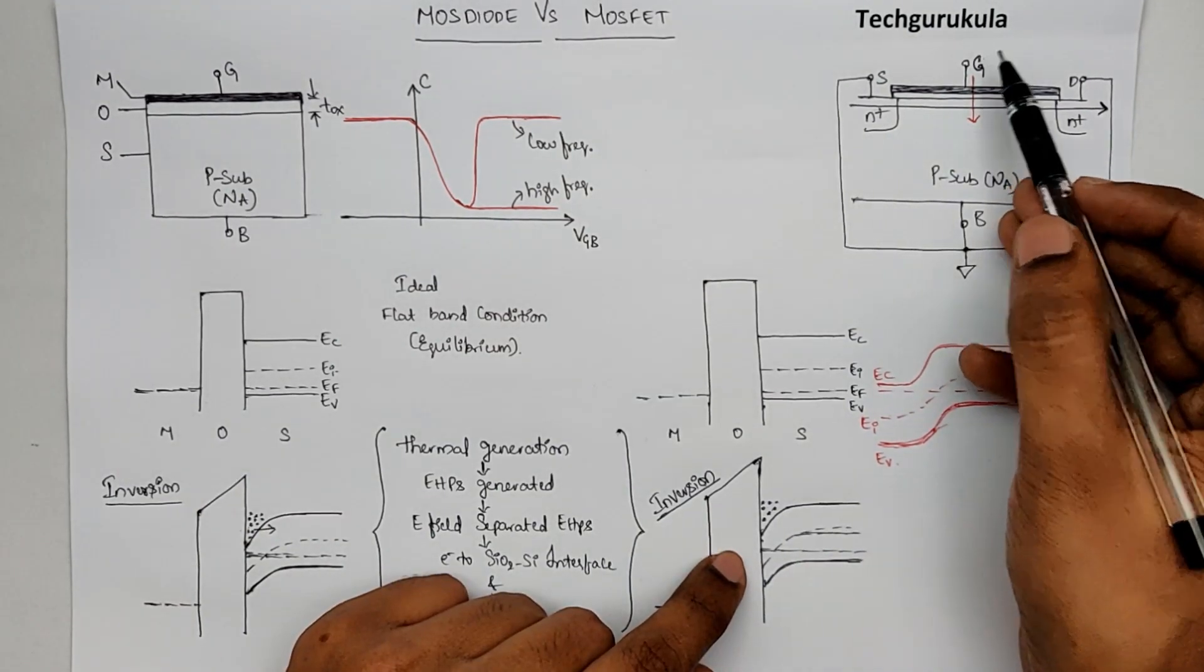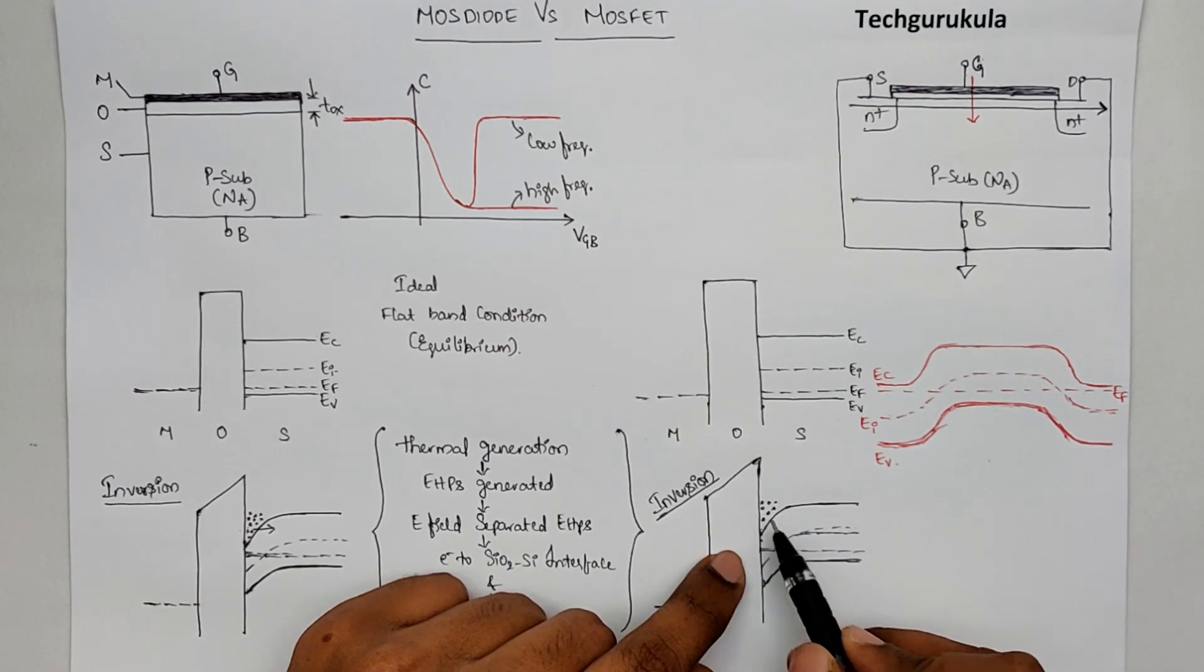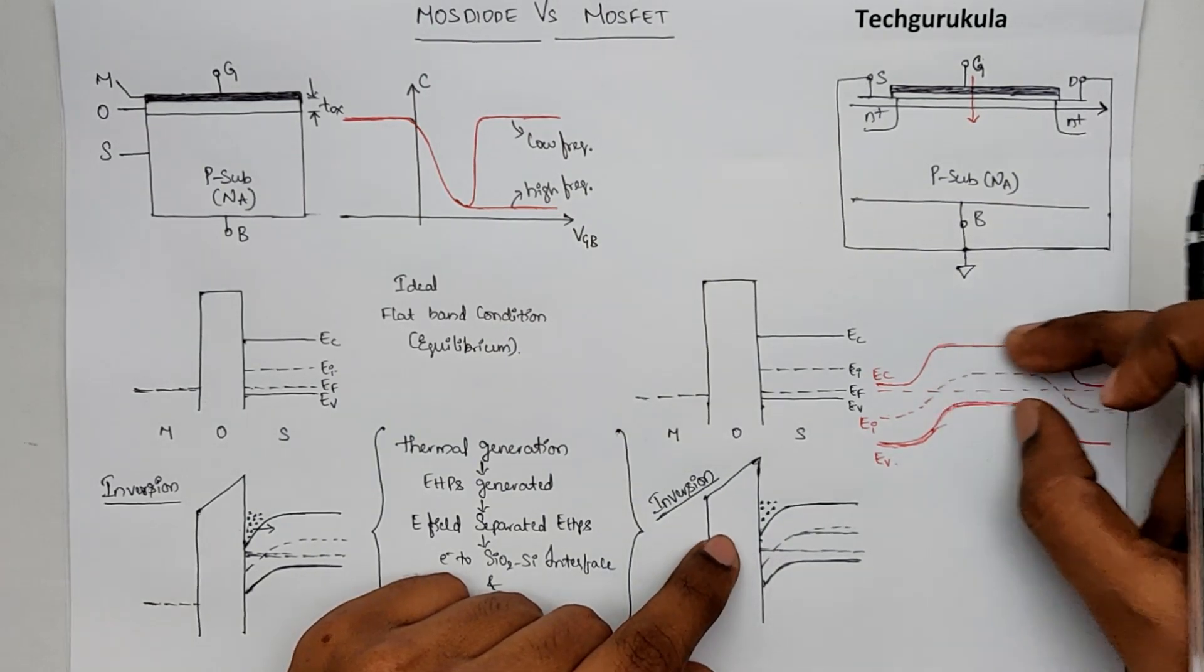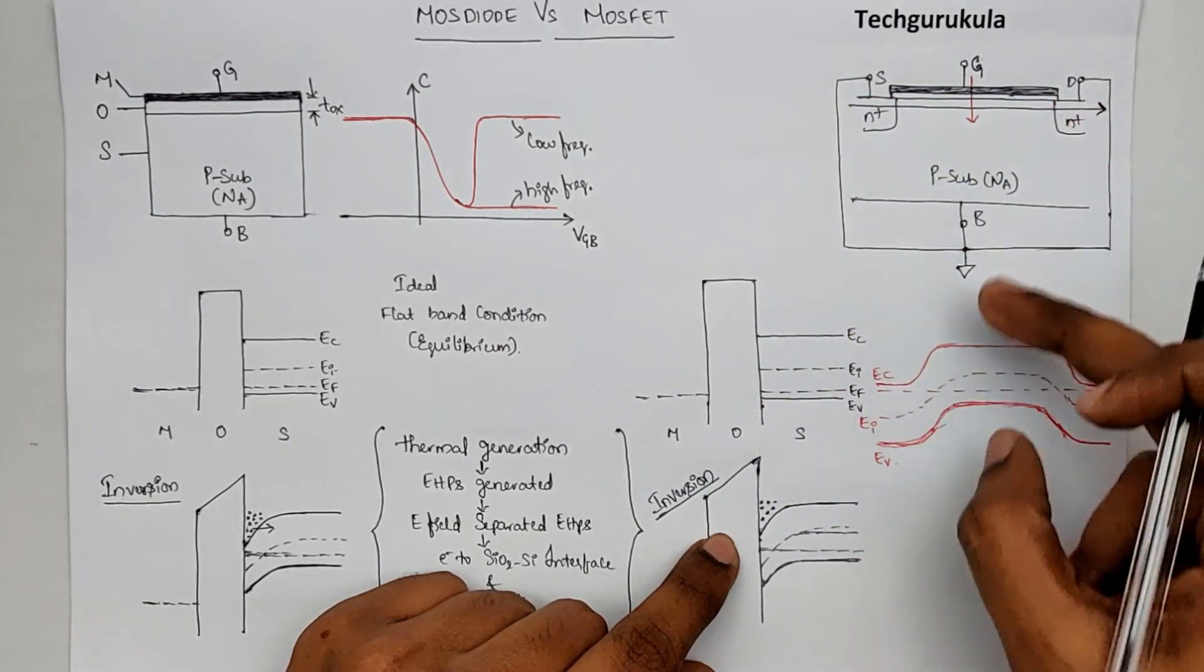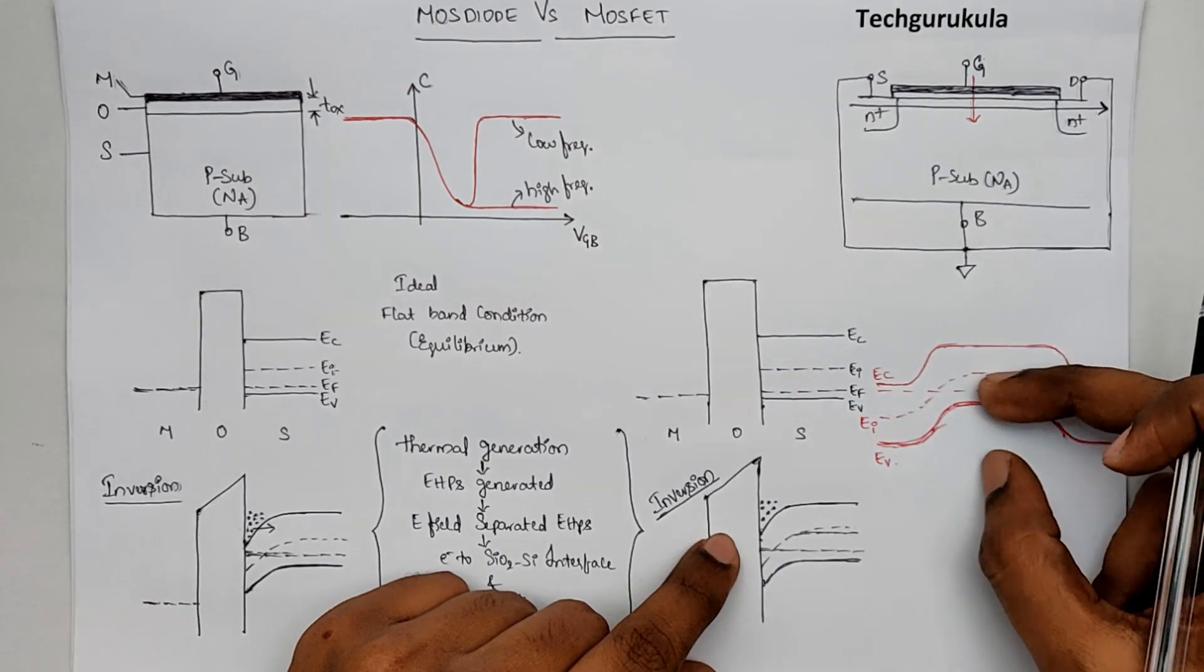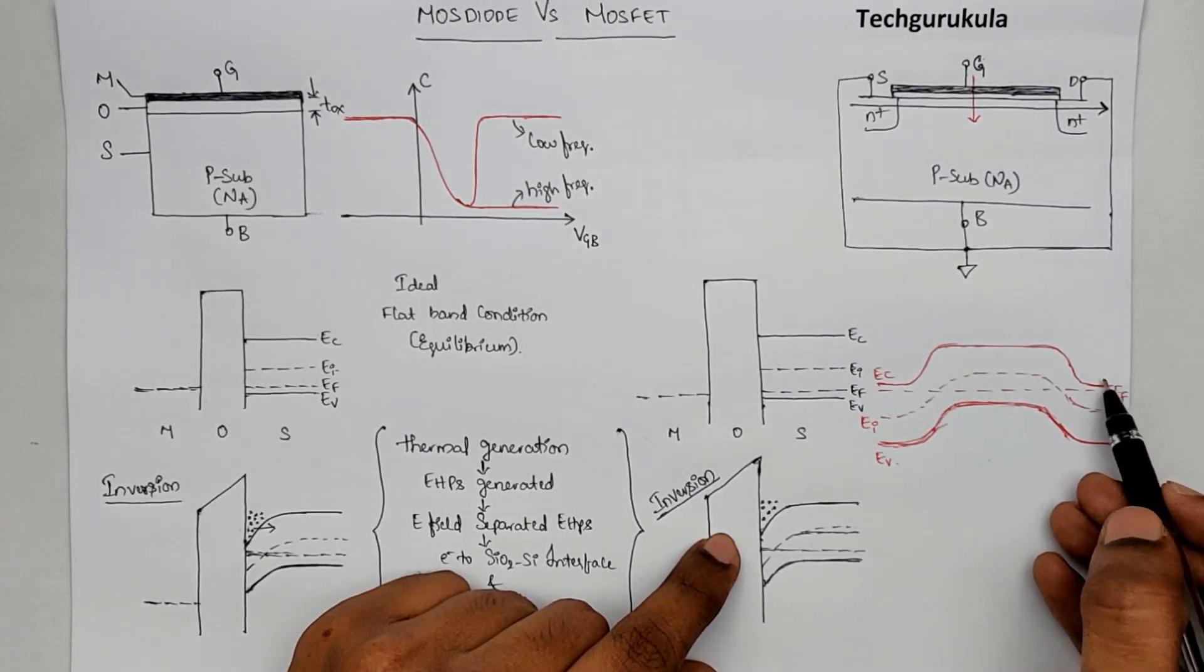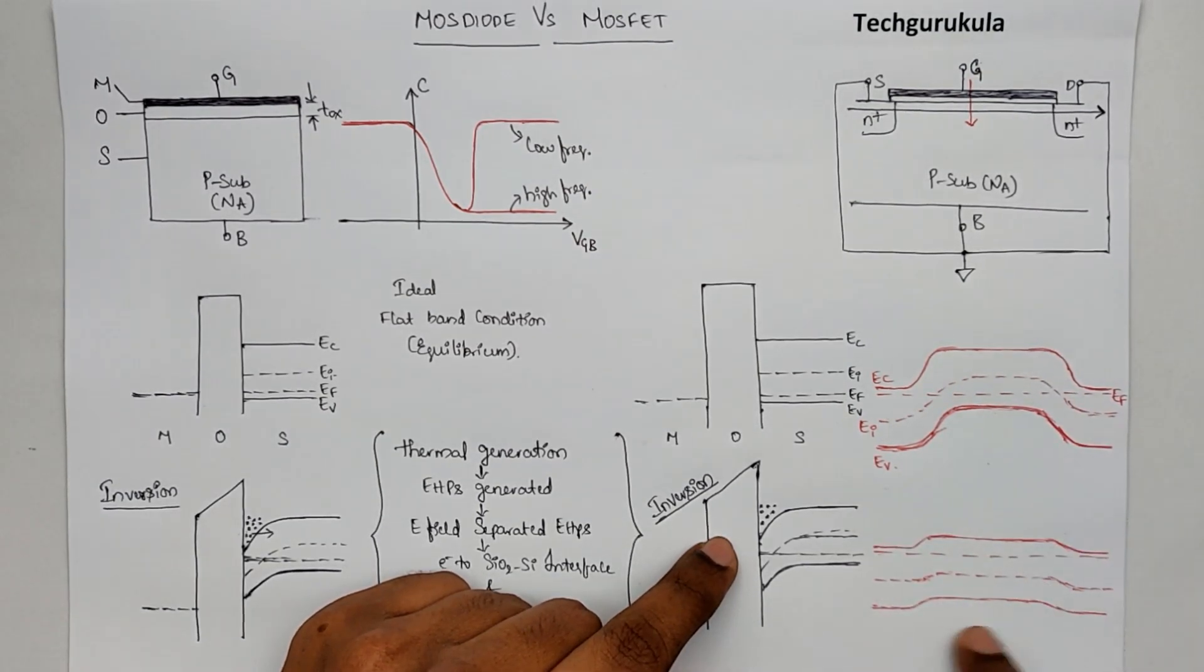When we increase the potential at gate, the energy band diagram in the substrate at the silicon dioxide-silicon interface bends, which means this entire energy band here would go down as we are drawing this energy band diagram near the surface. So when gate potential is increased, this energy band would go down, reducing the barrier between this n plus to P substrate and from drain side also n plus to P substrate. This is how it looks.